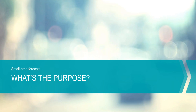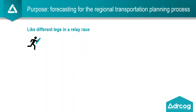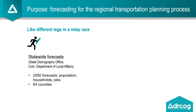So what's the purpose of this? It's helpful to back up and provide a little context of why we do this work. This is a helpful metaphor as we think about where our work doing the small area forecast fits into the larger forecasting and planning processes here at DRCOG and elsewhere. We start with the statewide forecast — this is the work from the State Demography Office. They're working at the state and county or regional levels of forecasts for households, populations, and jobs. Much of their work goes out to the year 2050.